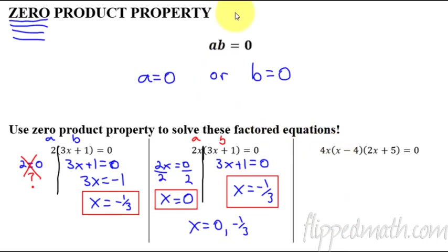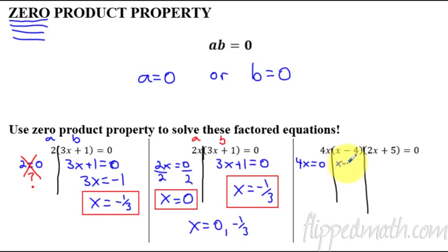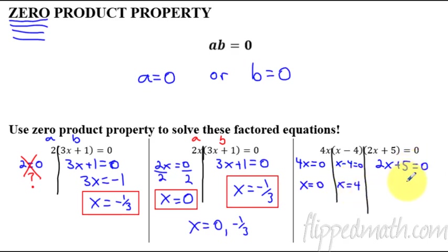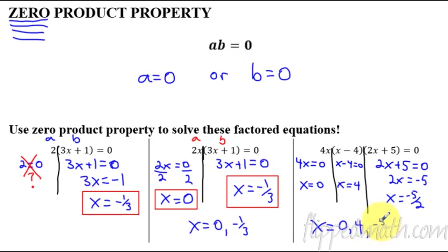Now we have three factors: 4x(x − 4)(2x + 5) = 0. We set each factor equal to zero. 4x = 0 gives x = 0. x − 4 = 0 gives x = 4. For 2x + 5 = 0: subtract 5 to get 2x = −5, divide by 2, so x = −5/2. Our three answers are x = 0, 4, and −5/2.